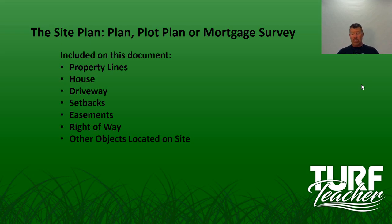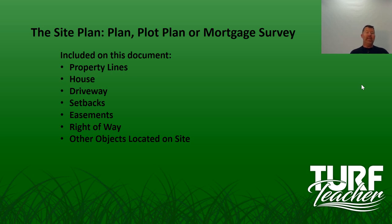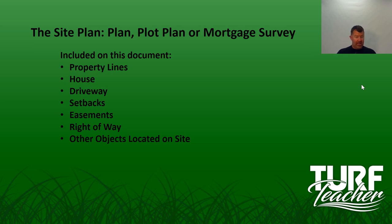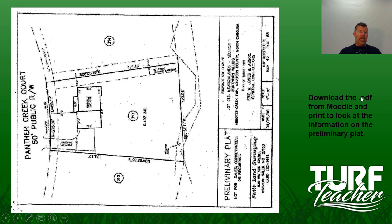What's included on a site plan document is your property lines, the footprint of the house, the driveway, any setbacks, easements, rights-of-way, and any other objects located on the site. The next slide is a survey of a property that we did the landscape for. It has an easement — they have a pond in the back, and there's an easement between this client's home and their neighbors so they can get down to the pond and do any type of work needed.